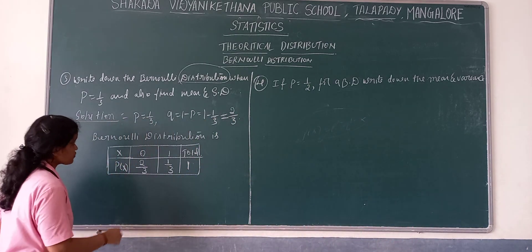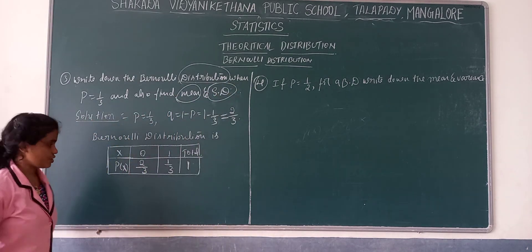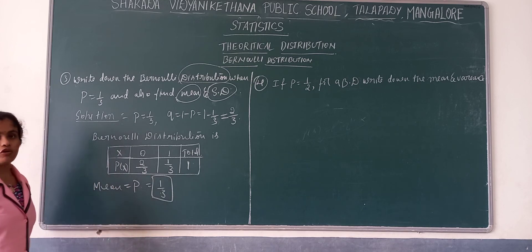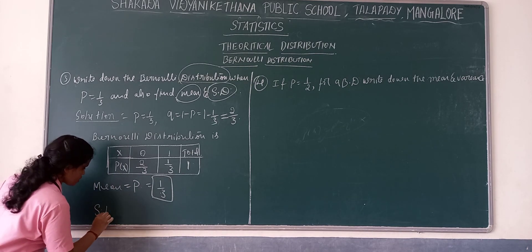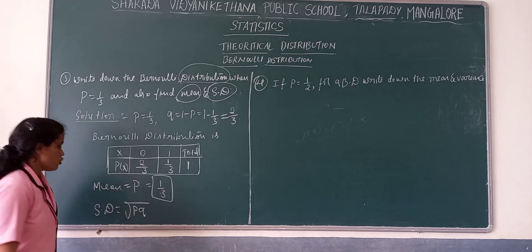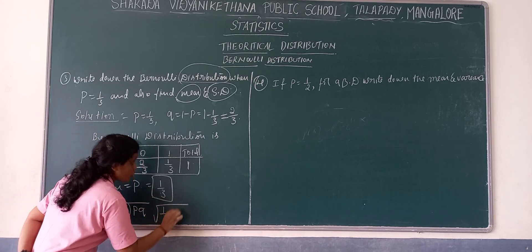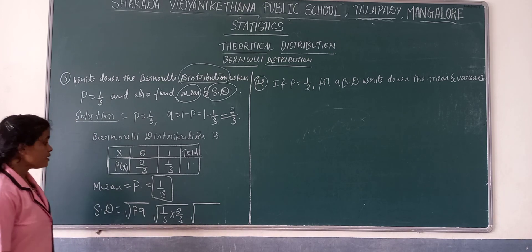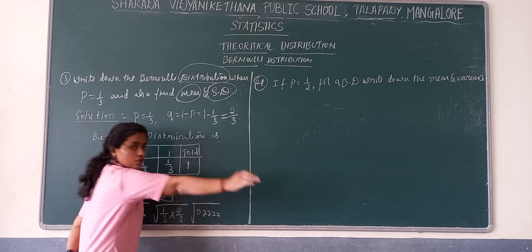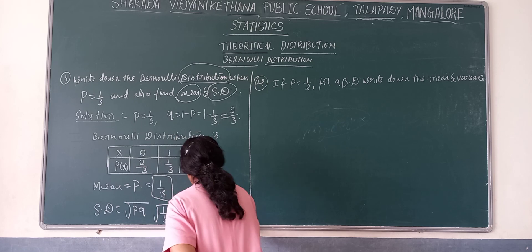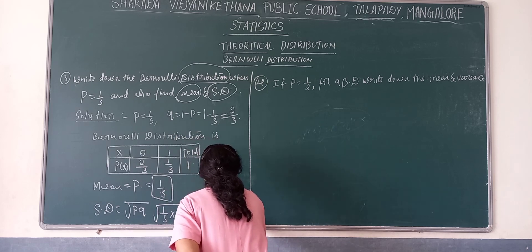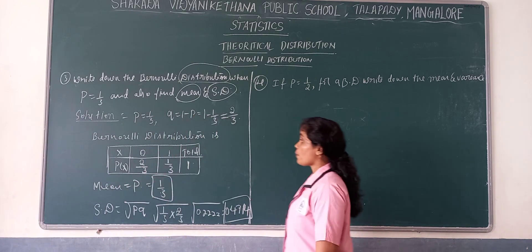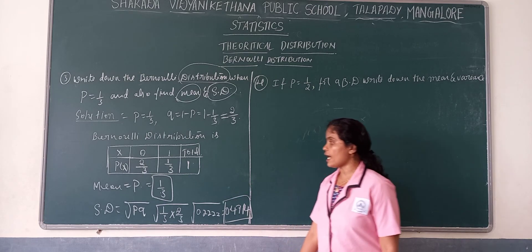Also find mean and standard deviation. Mean = P = 1/3. Standard deviation = √(PQ) = √(1/3 × 2/3) = √(2/9). The value of 2/9 is 0.2222... Taking the root, standard deviation = 0.4714.